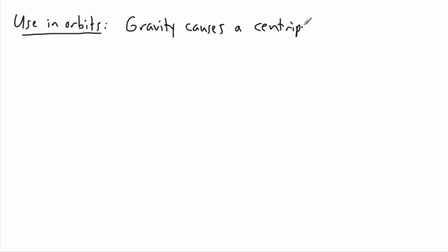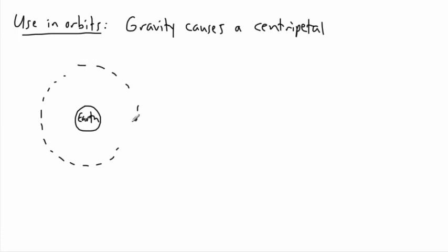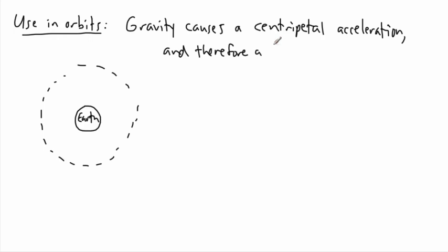So let's say you've got the Earth here and you want to go out in orbit. You're going forward and you're always feeling a downwards force as you're doing it. So this gravity can cause a centripetal acceleration because you're going in a circle, and that means a centripetal force. So you could say that this downwards gravitational force is equal to some sort of centripetal force.